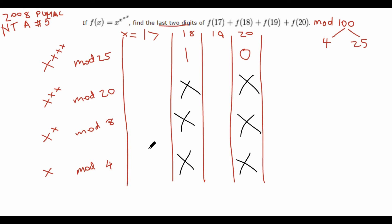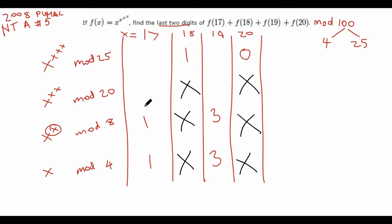Now for x = 17 and x = 19. Using the table: 17 mod 4 is 1, and 19 mod 4 is 3. Plugging back in: 17 to the 1 mod 8 is just 1. And 19 to the 3 mod 8 is 3 cubed mod 8, which is 27 mod 8, which is 3. Then 17 to the 1 mod 20 is just 17. And 19 to the 3 mod 20 is (-1) to the 3 mod 20, which is -1.